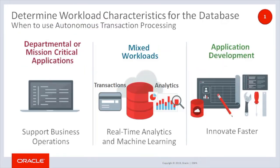Oracle Autonomous Transaction Processing supports all operational business systems, including both departmental as well as mission-critical applications. But unlike other cloud providers, ATP doesn't just support one transaction processing use case — it can also support mixed workloads, where you have a mixture of transaction processing, reporting, and batch processing, making it the perfect platform for real-time operational databases. This enables users to get immediate answers to any question. Integrated machine learning algorithms make it the perfect platform for applications with real-time predictive capabilities. Advanced SQL and PL/SQL support make it the perfect platform for application developers, who can instantly and effortlessly create and use Autonomous Transaction Processing.